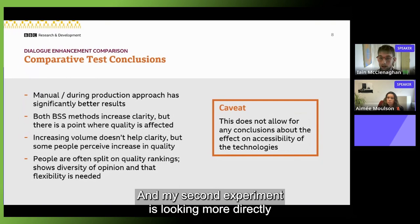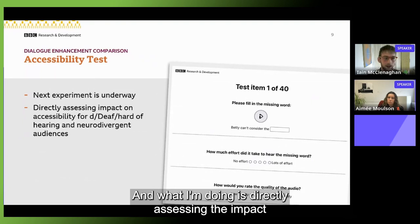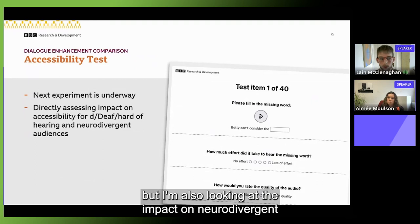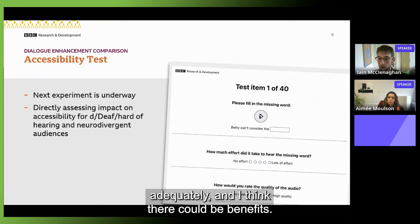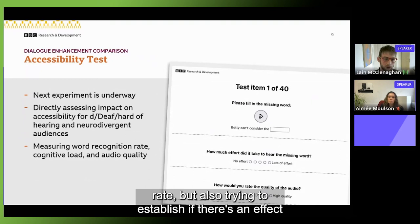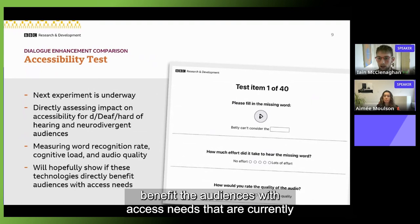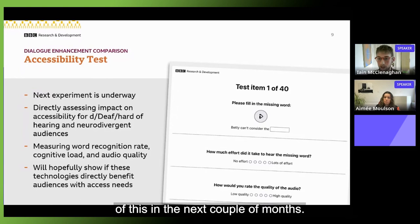So this is currently underway. I'm recruiting for it right now. And what I'm doing is directly assessing the impact on accessibility not just for deaf and hard of hearing individuals but I'm also looking at the impact on neurodivergent audiences as I think this is an area that's not being studied adequately and I think there could be benefits. I am going to be looking at the effect on word recognition rate but also trying to establish if there's an effect on cognitive load and audio quality as well, and I'm hoping to show if these technologies will directly benefit the audiences with access needs that are currently underserved. And hopefully I'll be able to present the results of this in the next couple of months.